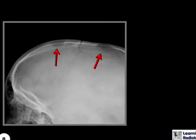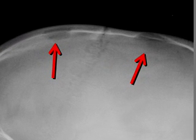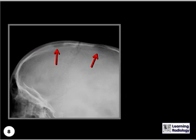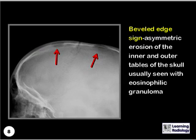What sign is demonstrated here? That's the beveled edge sign, which is the asymmetric erosion of the inner and outer tables of the skull, usually seen with the eosinophilic granuloma.